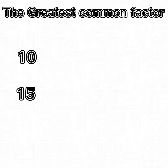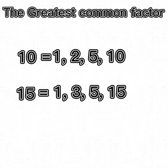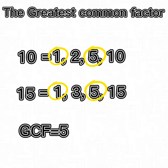Let's find the GCF of 10 and 15. The factors of 10 are 1, 2, 5, and 10. The factors of 15 are 1, 3, 5, and 15. The common factors in both numbers are 1 and 5, so 5 would be the greatest common factor.